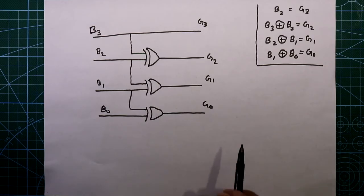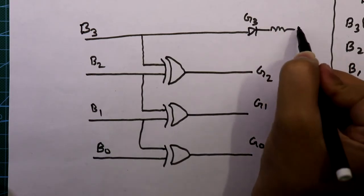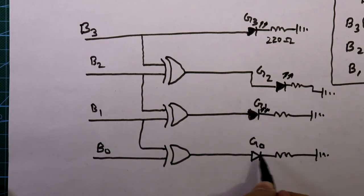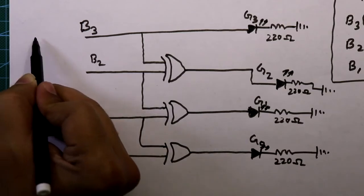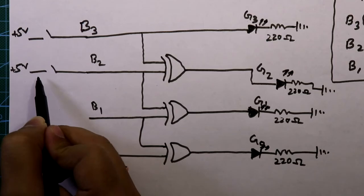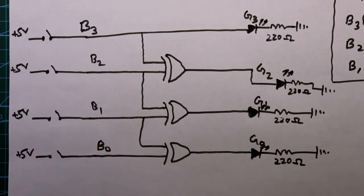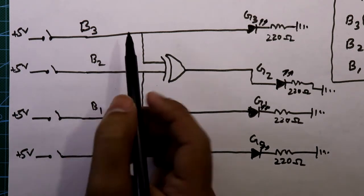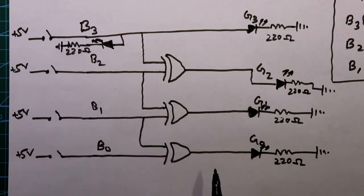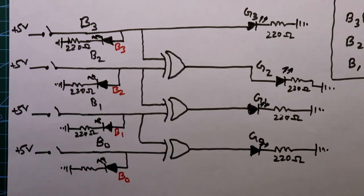Now we have to add some resistors and LEDs. For the output side we need an LED and one 220 ohm resistor connected to ground. For the input side we add a switch with plus 5 volts. When a switch is on, the corresponding input bit gets activated. We also add LEDs for the inputs — for B3, one LED connected with a 220 ohm resistor to ground, and the same for B2, B1, B0. The output LEDs represent G3, G2, G1, G0.